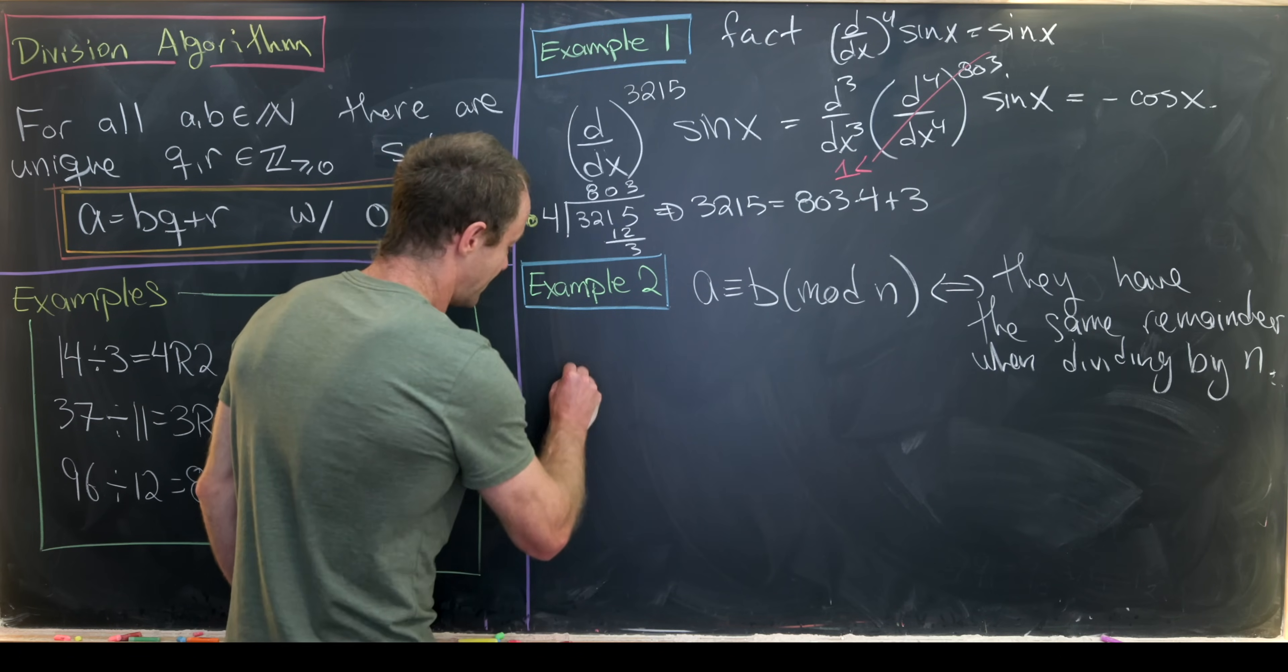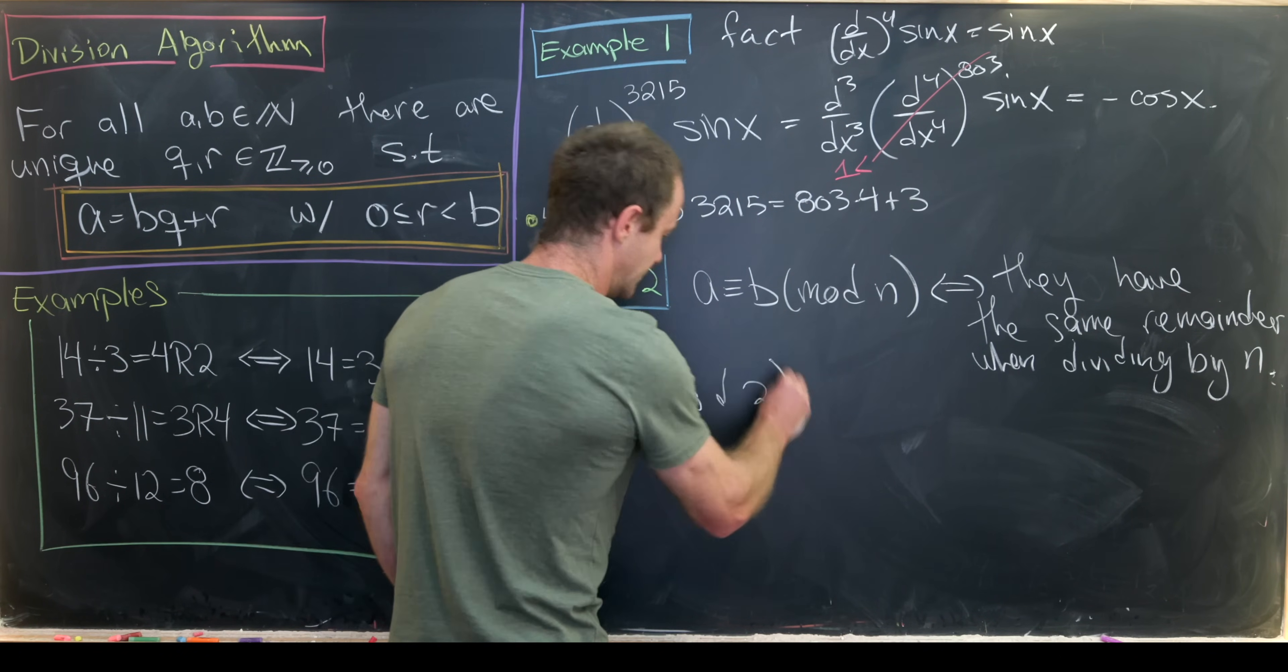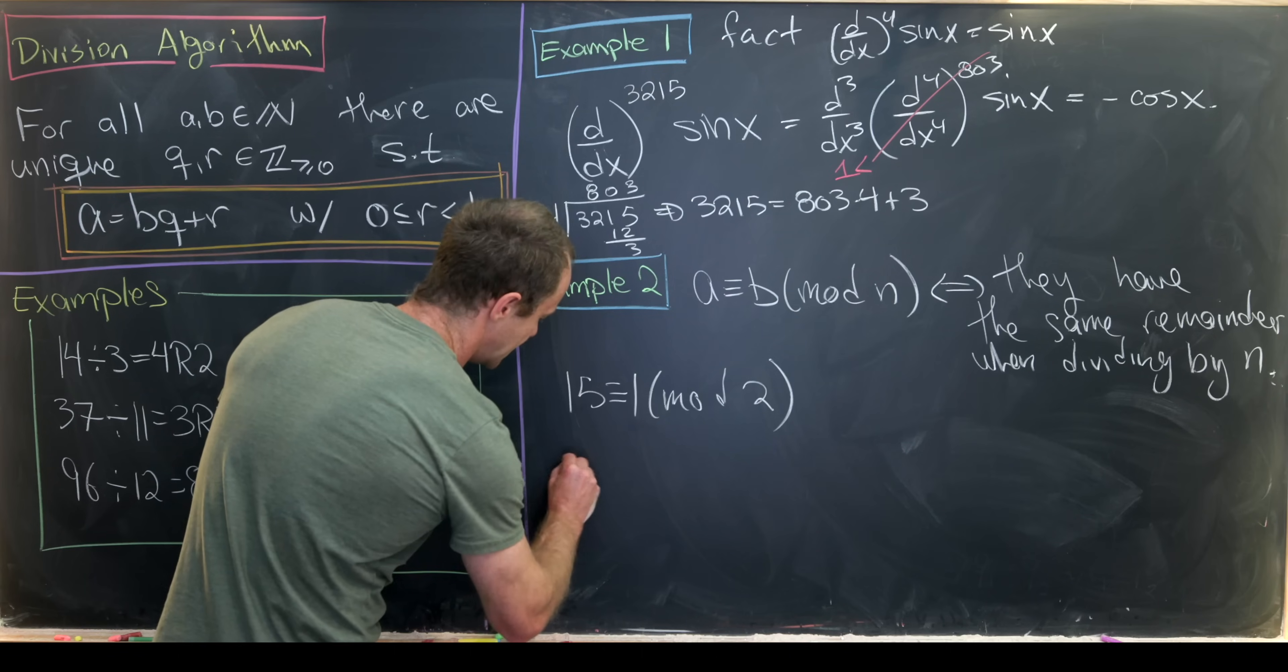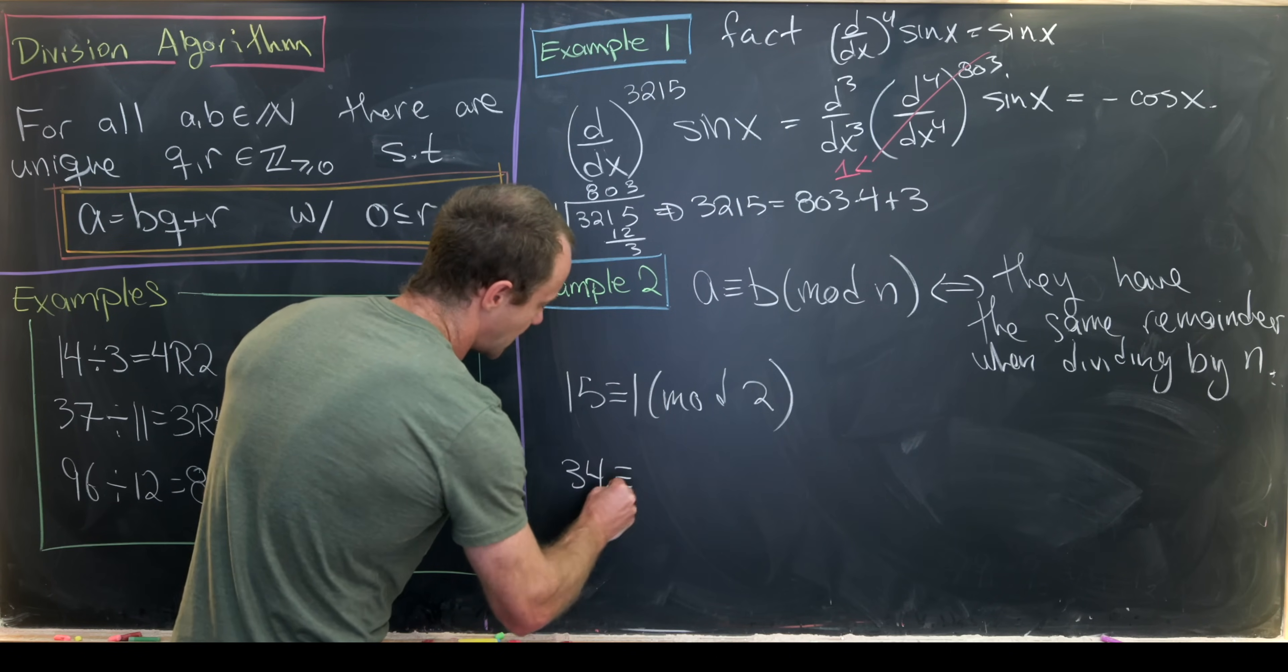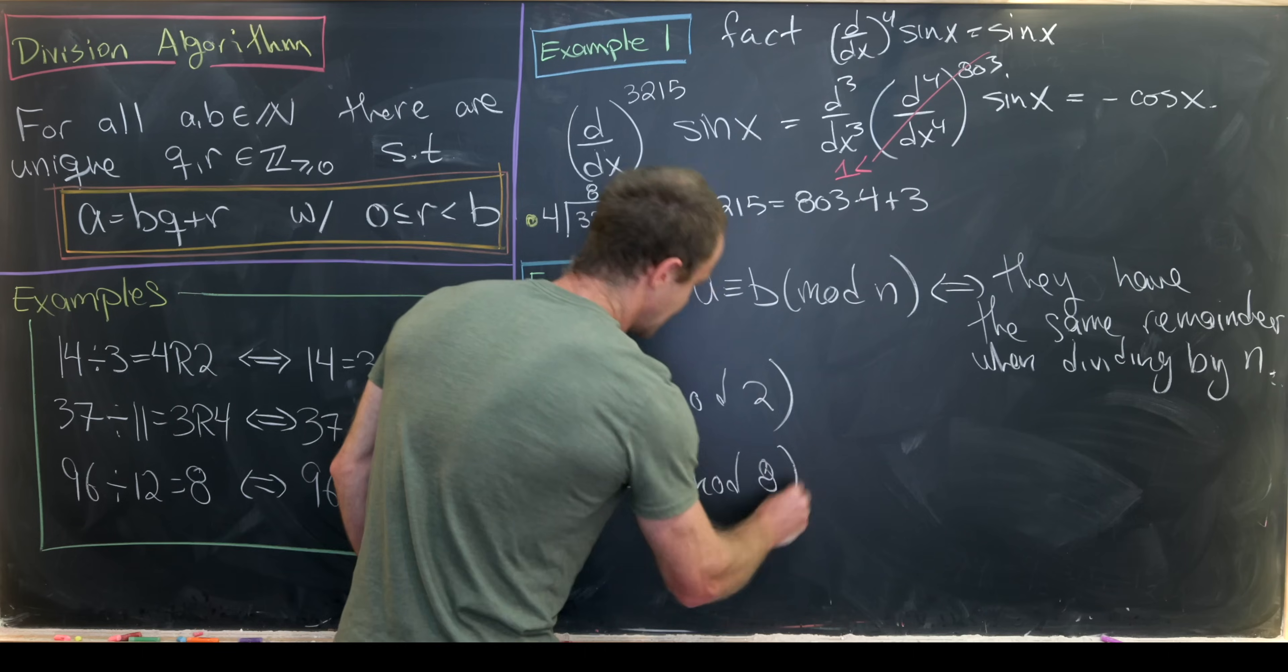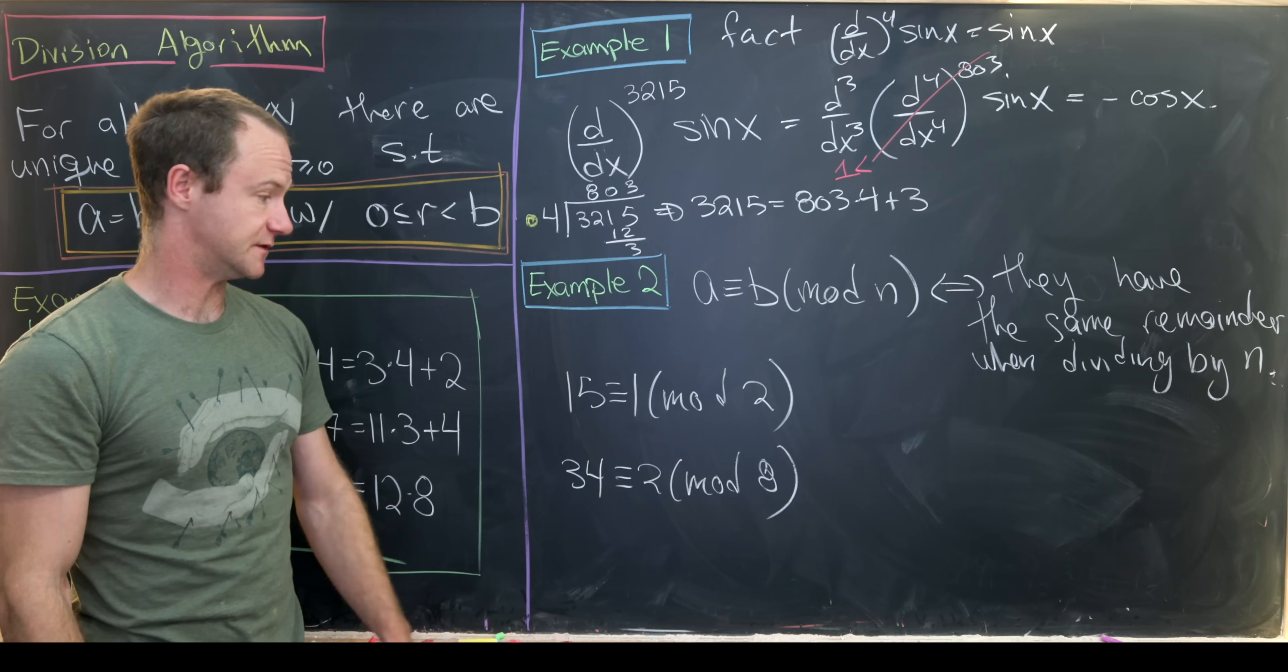So for example, 15 is congruent to 1 mod 2. That's because if you divide 15 by 2 you get a remainder of 1. Then next, 34 is congruent to 2 modulo 8. That's because if you divide 34 by 8 you get a remainder of 4.